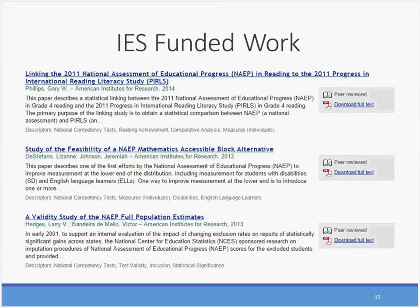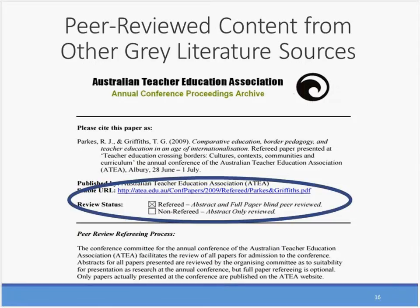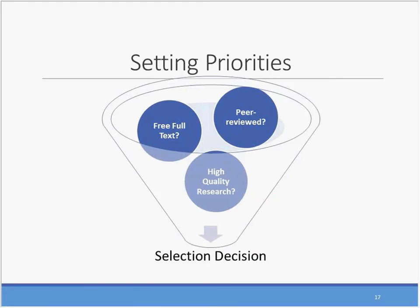We know that there is work published in non-journal sources outside of IES that is also peer-reviewed. For example, we have seen conference papers like one published by the Australian Teacher Education Association. On the front page of the document, it states that the abstract and full paper are blind peer-reviewed. We think that it is confusing to have a paper like this that clearly identifies itself as peer-reviewed but did not receive the peer-reviewed flag. When we look to add new sources to our collection, we have preference to sources that publish peer-reviewed content. By extending our definition of peer review, we will be able to expand this priority to the highest-quality gray literature material that our users most want to use.